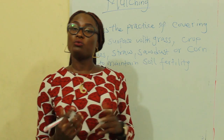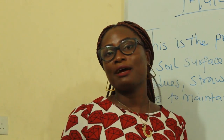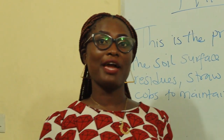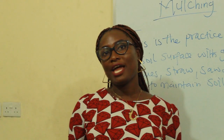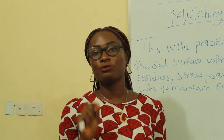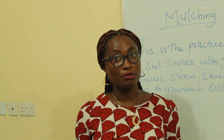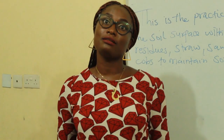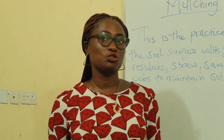That's it for ways of maintaining soil fertility. We've been able to look at the six different ways. I'm going to end this lesson with a recap. Soil fertility is the ability of the soil to supply essential nutrients necessary for the growth of plants. The six different ways of maintaining soil fertility are: crop rotation, bush fallowing (also called shifting cultivation), cover cropping, organic manures, inorganic manures (also called fertilizers), and mulching.